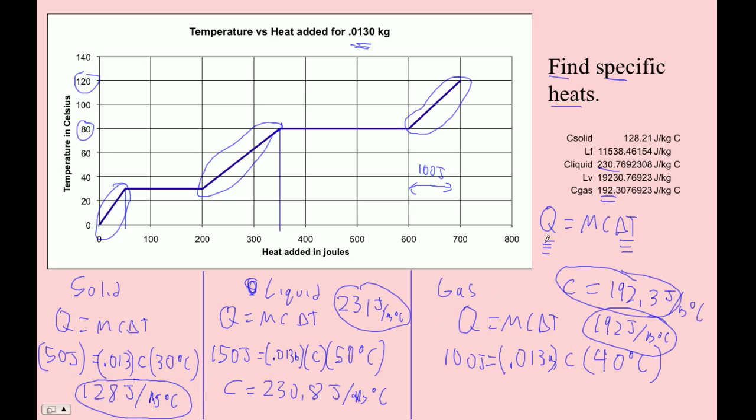So just read the Q off the graph. Q is this way. Delta T is this way. And then just use mcΔT. That's pretty much all you need to do with graphs.